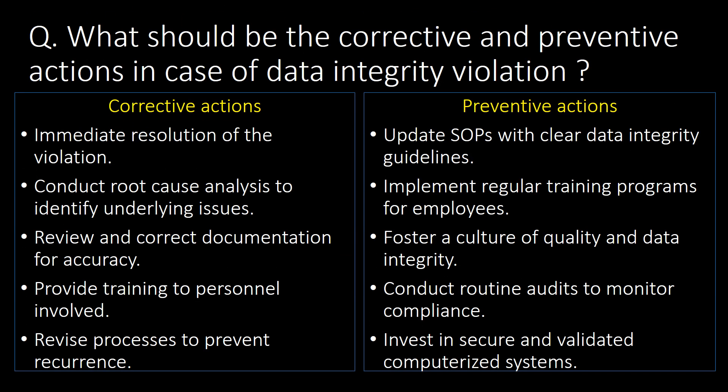What should be the corrective and preventive actions in case of a data integrity violation? Corrective actions include: immediate resolution of the violation, conducting root cause analysis to identify underlying issues, reviewing and correcting documentation for accuracy, providing training to personnel involved, and revising processes to prevent recurrence. Preventive actions include: updating SOPs with clear data integrity guidelines, implementing regular training programs, fostering a culture of quality and data integrity, conducting routine audits, and investing in secure and validated computerized systems.